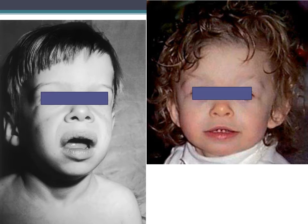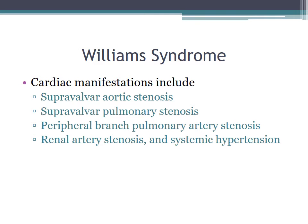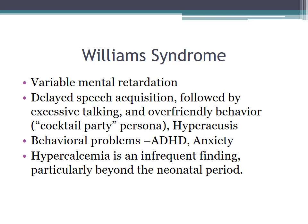Typical facial features of Williams syndrome include stellate irises, a short nose with a bulbous nasal tip, flat nasal bridge, prominent full cheeks, long philtrum, wide mouth, mild macroglossia, and triangular facies. Cardiac manifestations include supravalvar aortic stenosis, supravalvar pulmonary stenosis, peripheral branch pulmonary artery stenosis, and renal artery stenosis with systemic hypertension. These patients are incredibly friendly with a cocktail party persona, have delayed speech acquisition, hyperacusis, variable intellectual disability, ADHD, anxiety, and can have hypercalcemia.